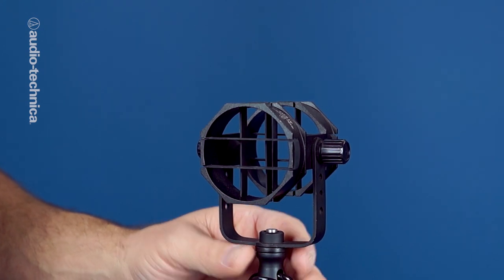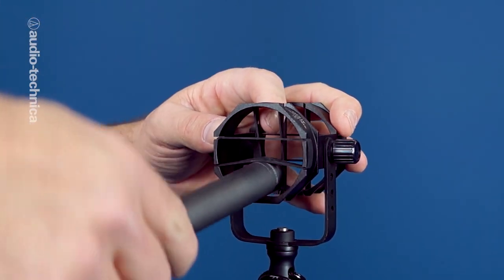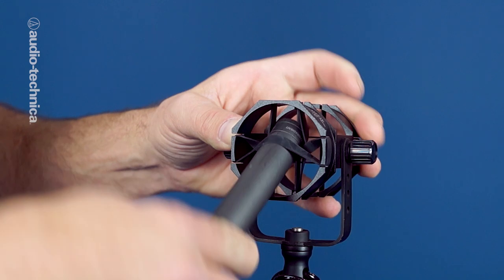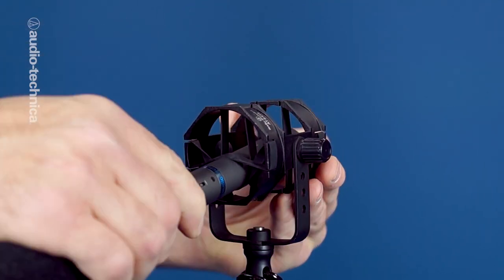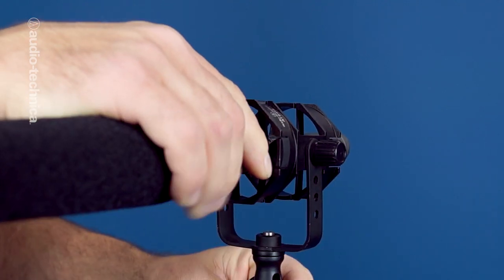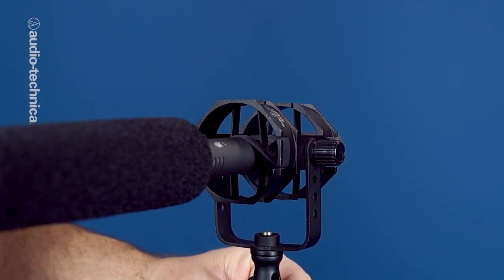Always use a good shock mount to isolate any handling noise from the boom pole. Don't just insert the mic into the center opening of this tic-tac-toe grid. You always want to criss-cross or over-under the horizontal band so that the mic is securely supported.